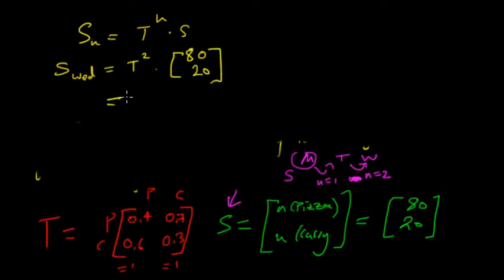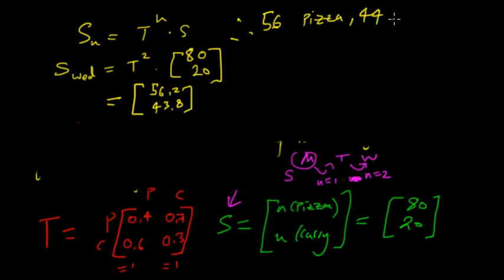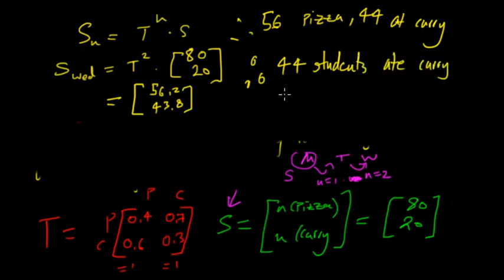Sub that into your calculator and we get that 56.2 and 43.8. So you can round that and say that, therefore, looking at the top, 56 students ate pizza and 44 ate curry. So answering the question, we have that 44 students ate curry on Wednesday.